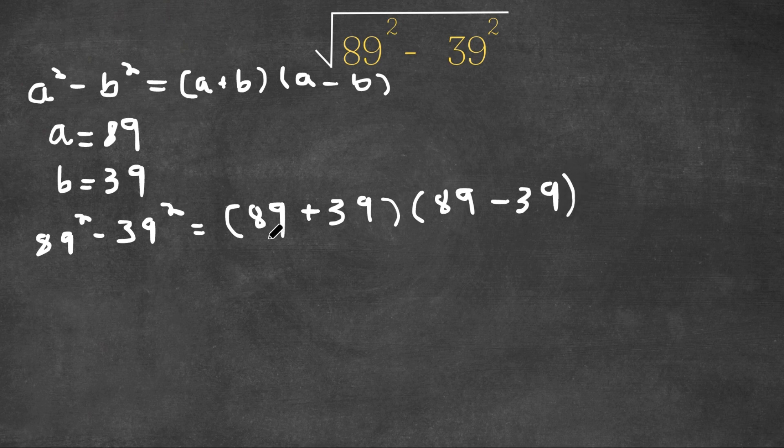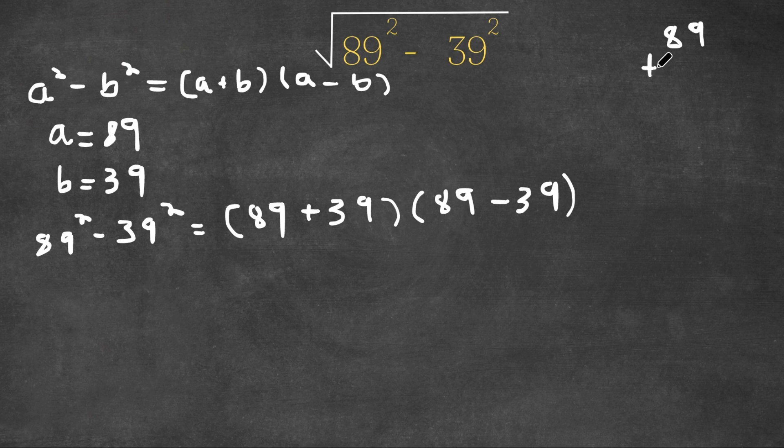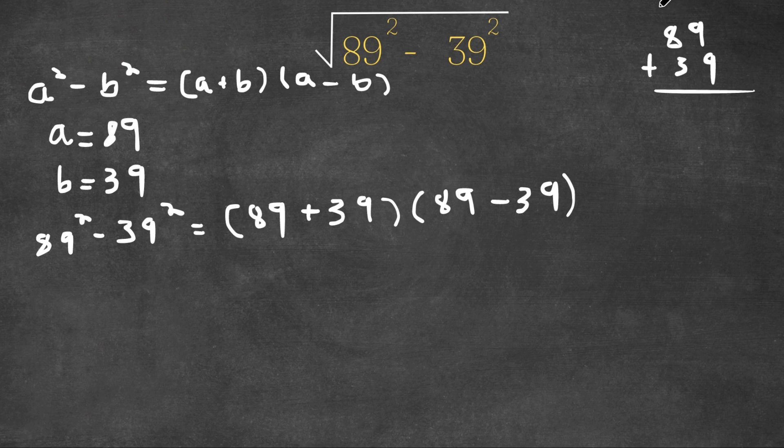So now what we have to do is solve what's in the parentheses. Let's first start with 89 plus 39. So 9 plus 9 is 18, so we carry the one and put the 8, and 8 plus 3 is 11, and 11 plus 1 is 12. So we have 128.